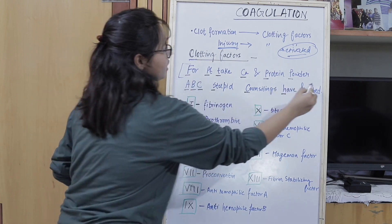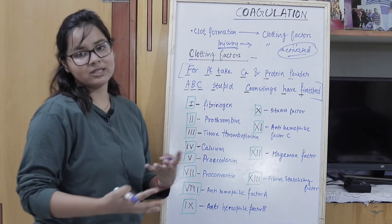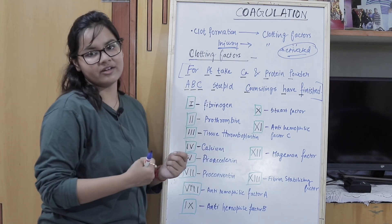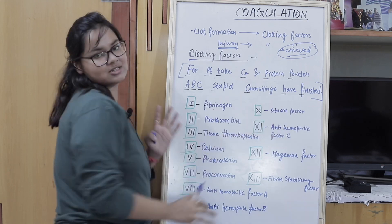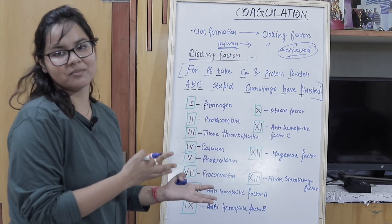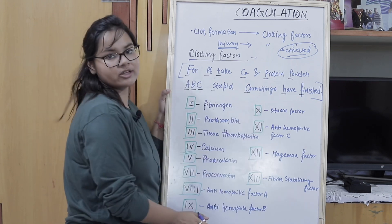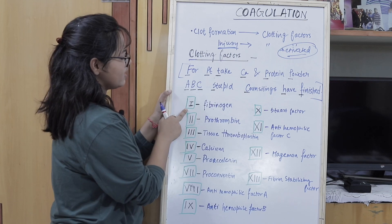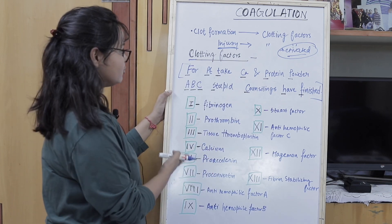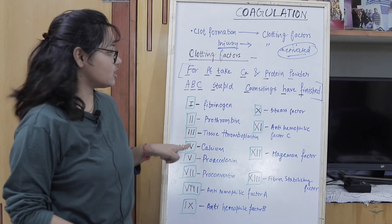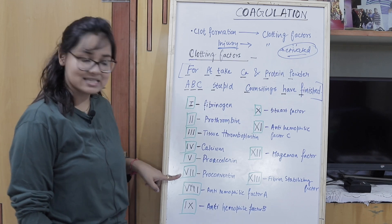There is a mnemonic I follow to remember the clotting factors. Don't go by the meaning of the statement, but it helps in remembering. The mnemonic goes: 'PT, take calcium and protein powder, ABC, stupid counselling have finished.' The first letter of each word gives the first letter of each clotting factor. F gives fibrinogen — clotting factor 1. P gives prothrombin — factor 2. T gives tissue thromboplastin — factor 3. C gives calcium — factor 4. P gives proacelerin — factor 5. The next P gives proconvertin — factor 7.